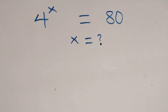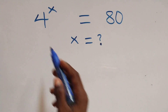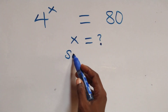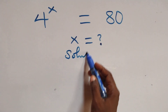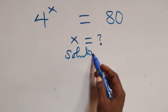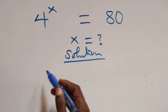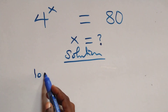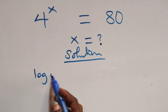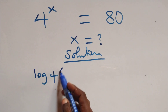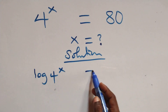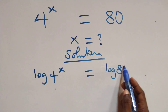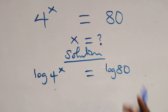Hello, you're welcome. Here we solve this nice exponential equation. We take the log on both sides, so we have log of 4 raised to the power x equals log of 80.